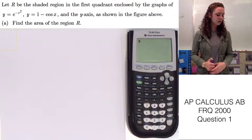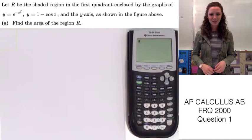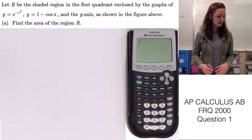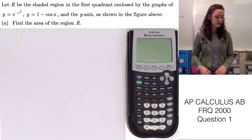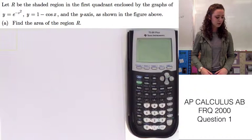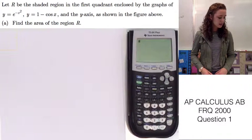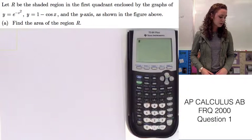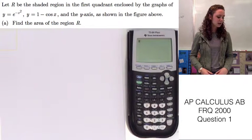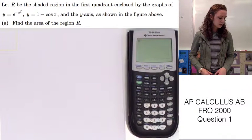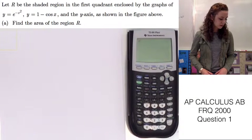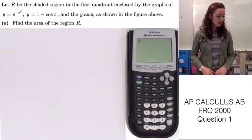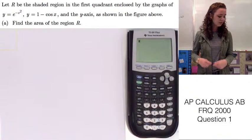I'm going to be doing question one from the 2000 AP Calculus test. This question says let R be the shaded region in the first quadrant enclosed by the graphs of y equals e to the negative x squared and y equals one minus cosine x and the y-axis as shown in the figure above. They already graphed it for us. Part A asks us to find the area of region R.